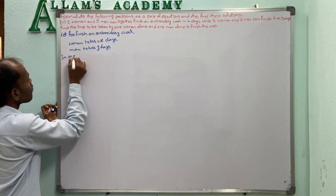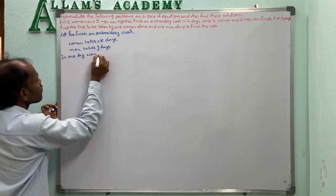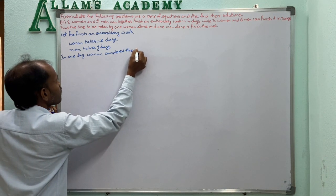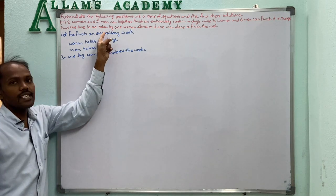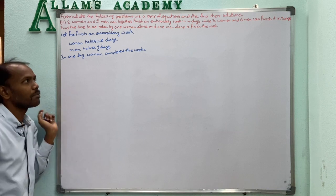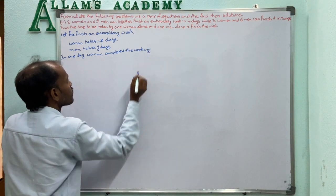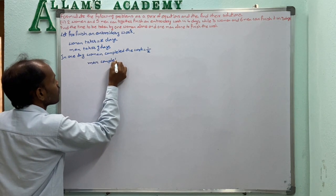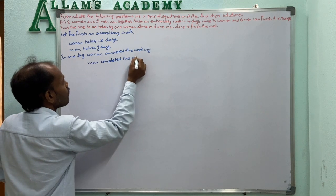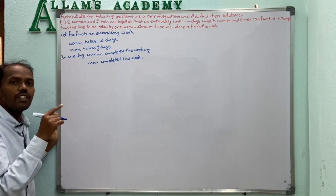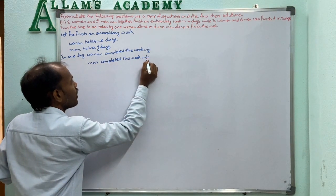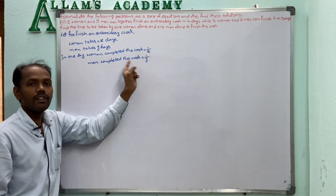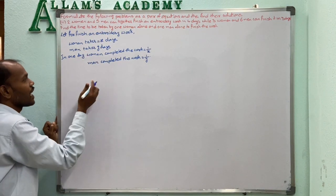In 1 day, a woman completes 1/X of the work, and a man completes 1/Y of the work. Now we write the given problem as linear equations.